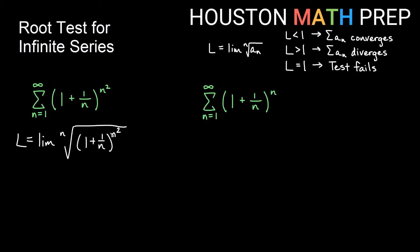And if I have n squared as a power and the nth root, I would go ahead and divide these. So n squared over n would just be n. So I would get that L equals the limit of (1 + 1/n)^n. And this is one of our special limits that we should know. This was e as a limit.